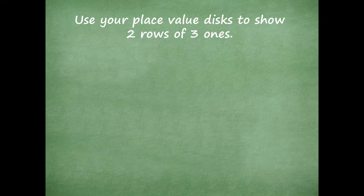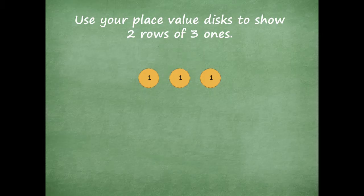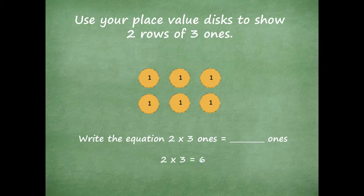Use your place value disk to show two rows of three ones. If you don't have place value disks, you can just draw a picture — draw a circle with a 1 in it for a ones place value disk, and a circle with a 10 in it for a tens place value disk. So there's my first row with three ones and my second row with three ones. The equation is two times three equals blank ones. Two times three is six, so there are six ones in two times three.